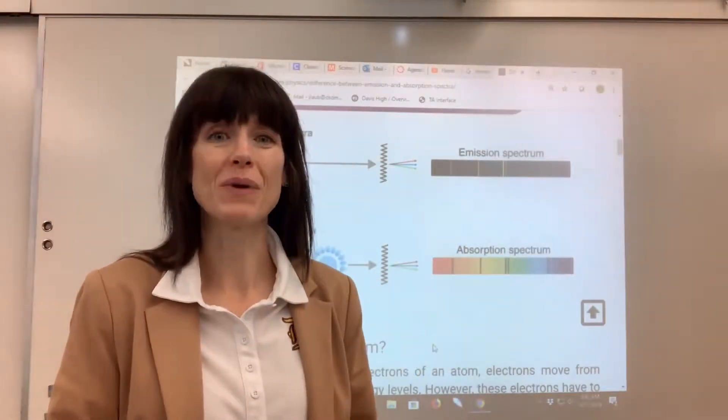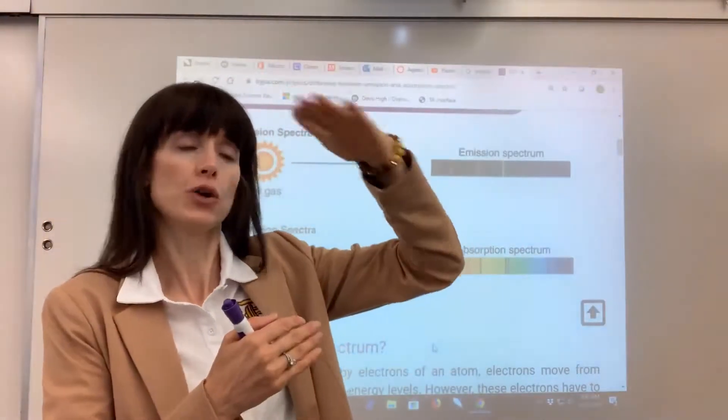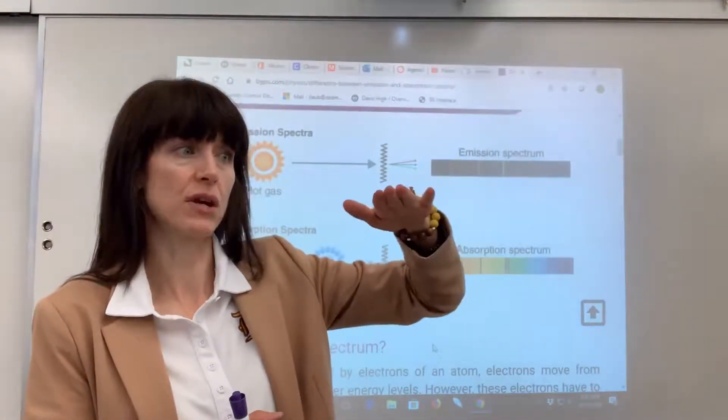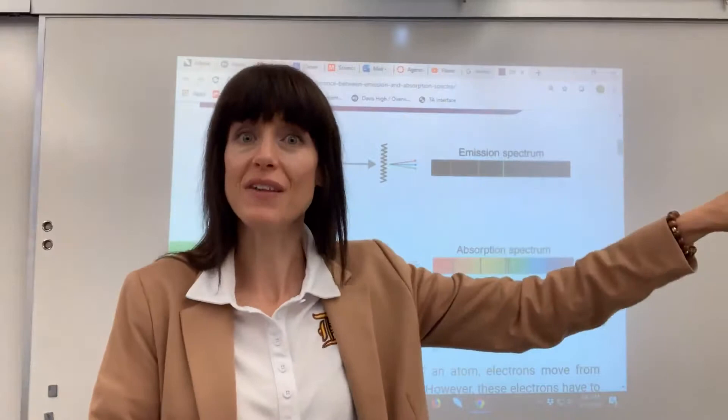That's from Bohr's model where the electrons go from ground state to a higher excited state, higher energy level, back down to ground state. They release energy in the form of light.